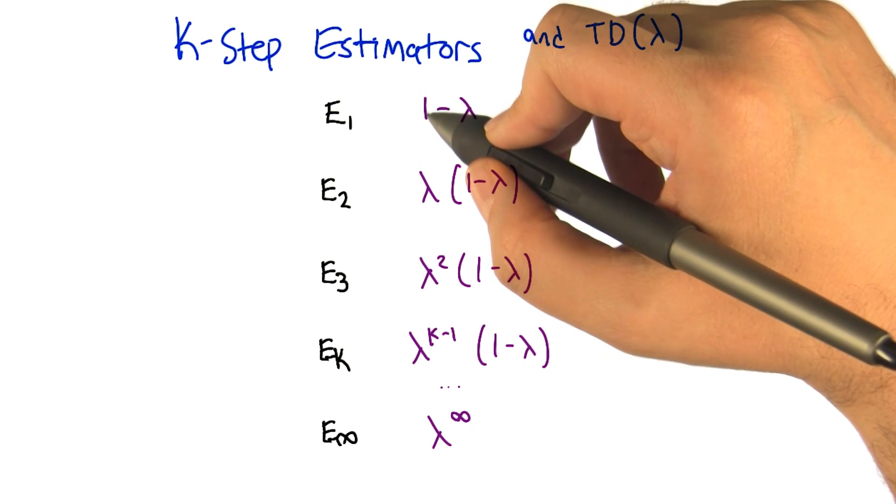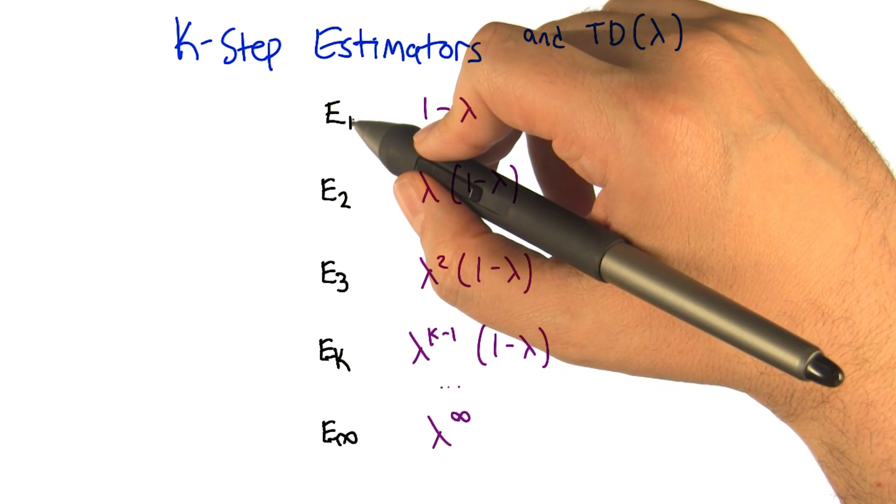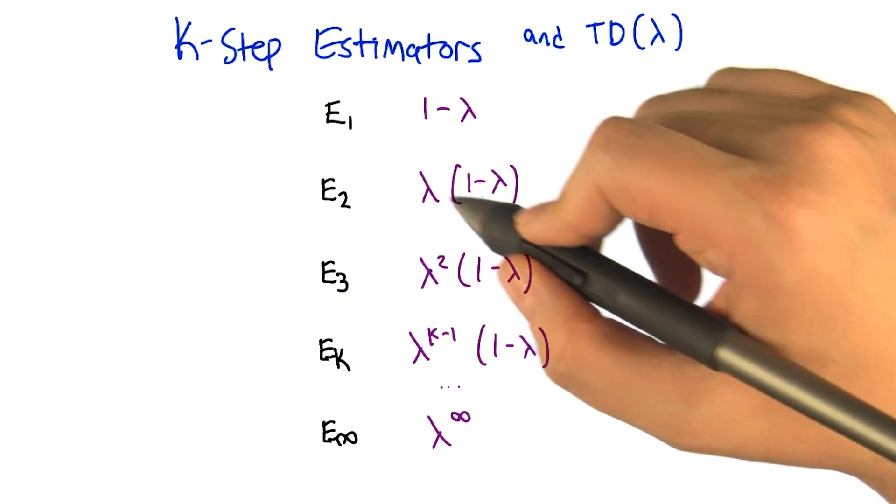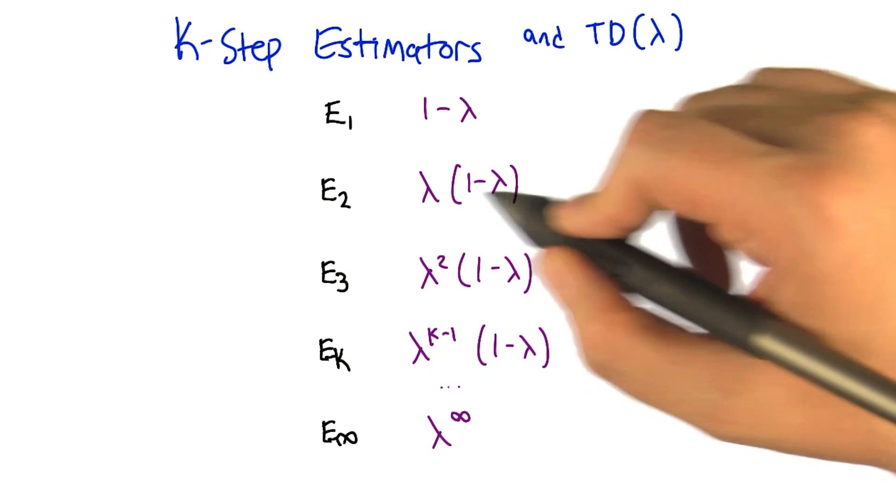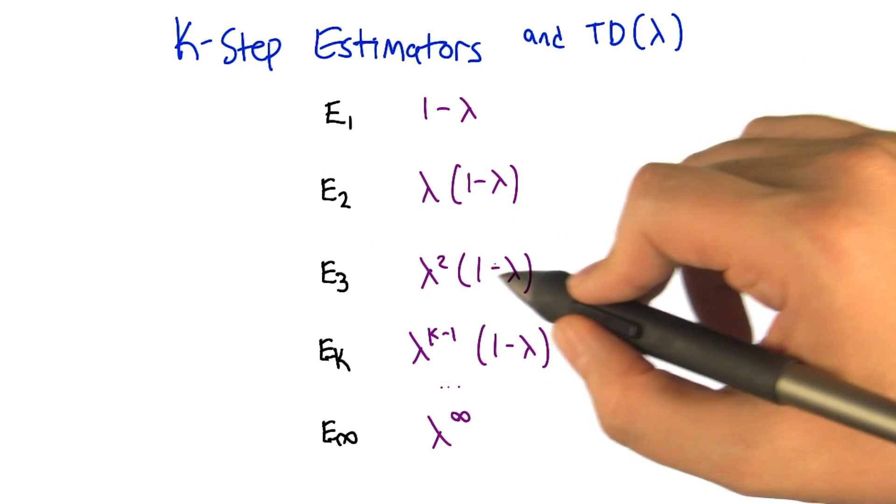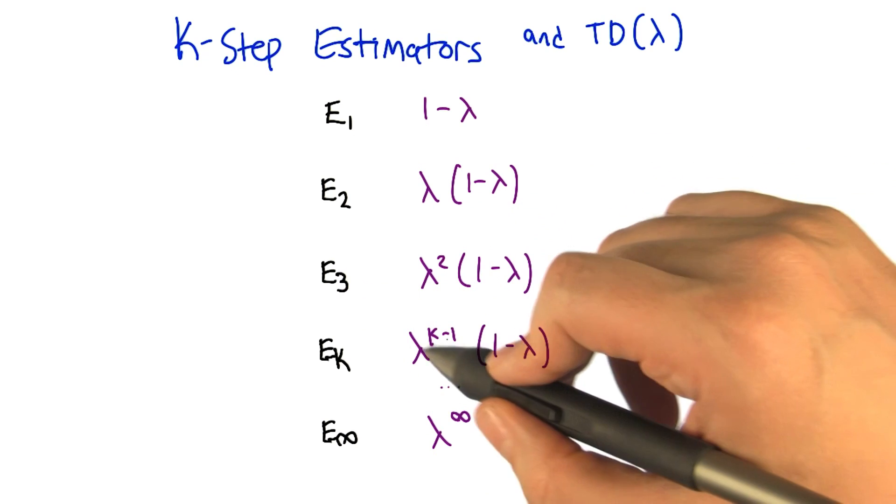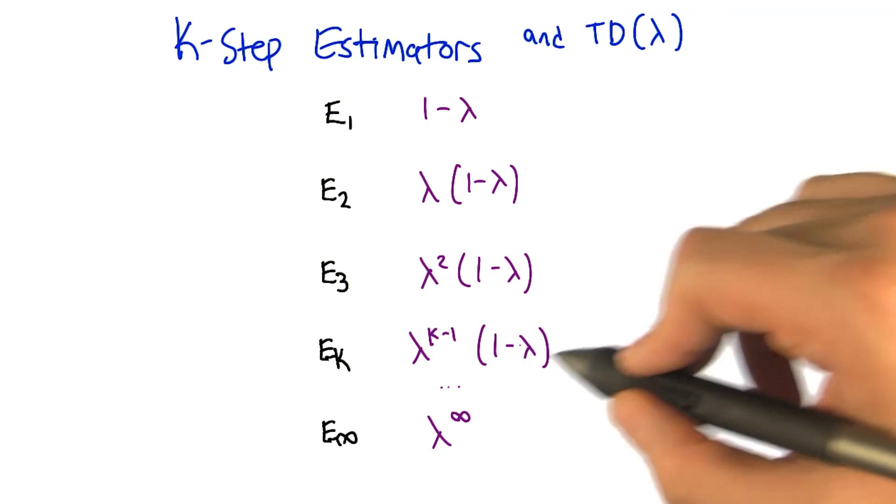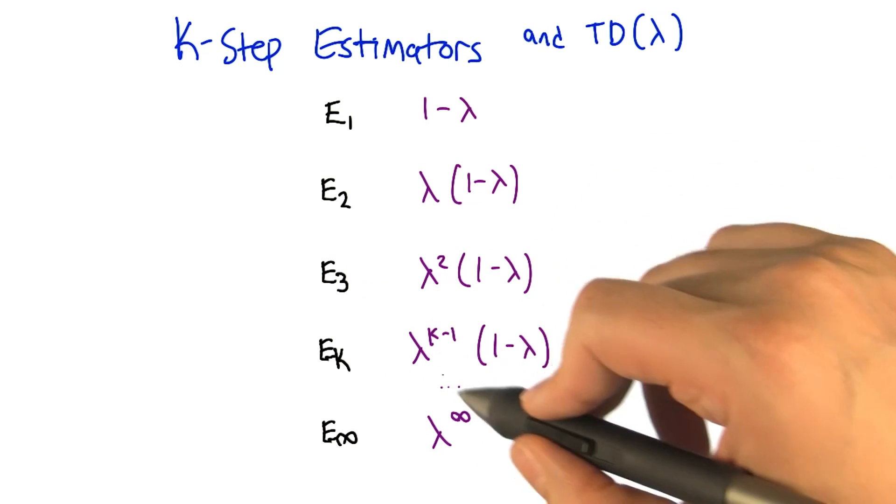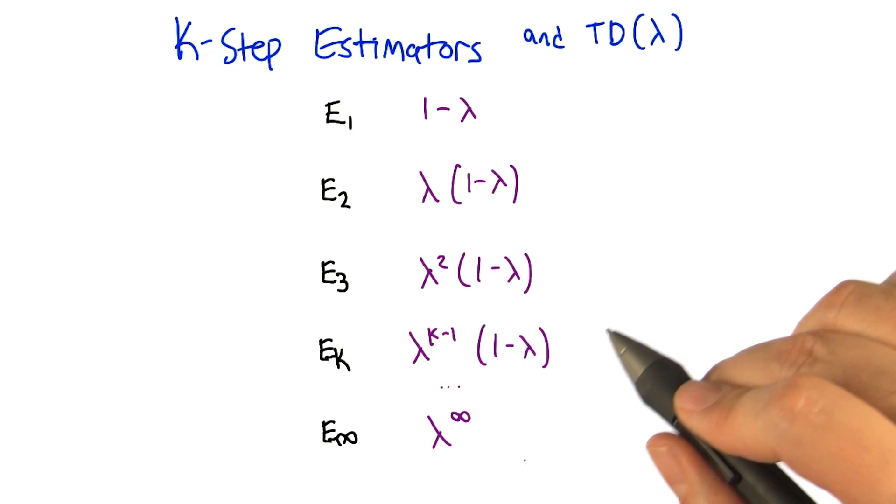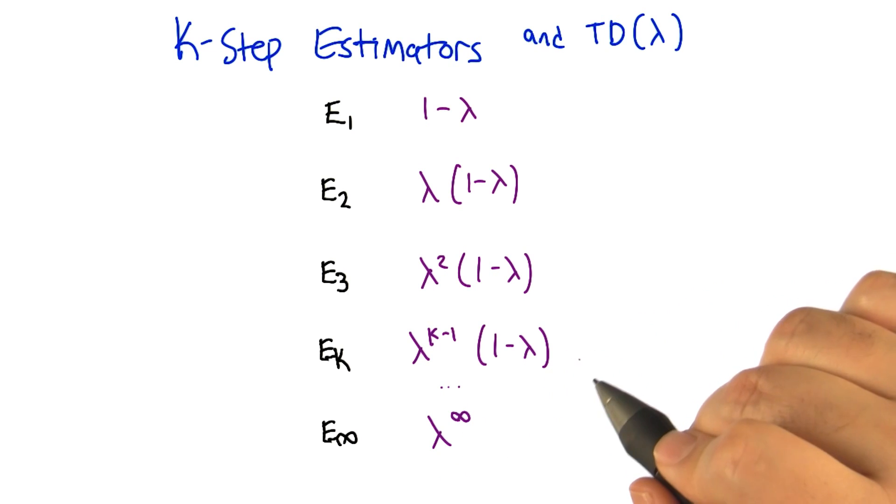And the weights are going to look like this: 1 minus lambda for the one step estimator, lambda times 1 minus lambda for the two step estimator, lambda squared times 1 minus lambda for the three step estimator, lambda to the k minus 1 times 1 minus lambda for the k step estimator, and then all the way down to essentially lambda to the infinity. But of course that one literally doesn't get any weight.